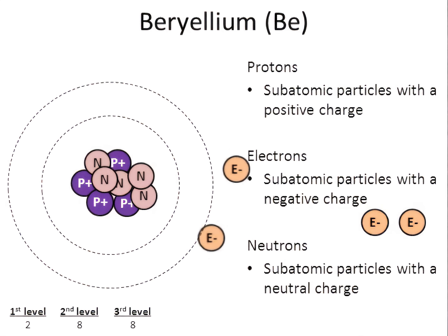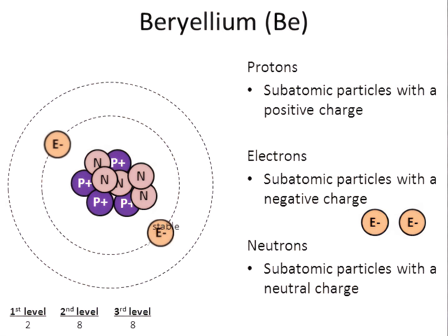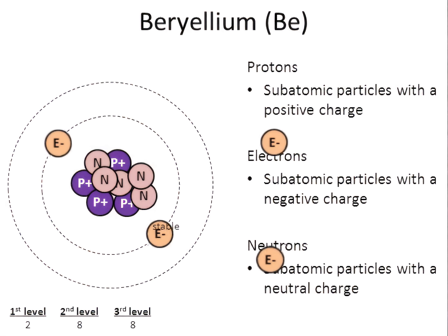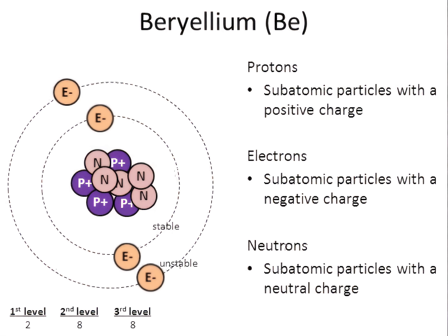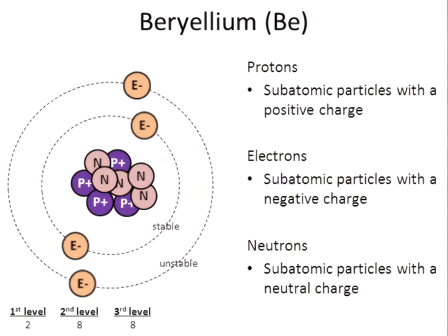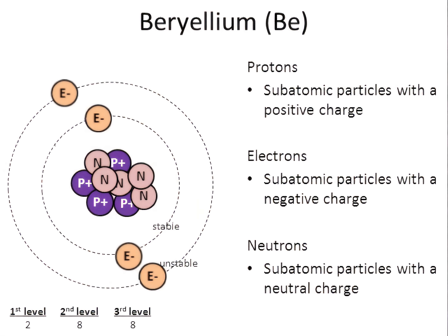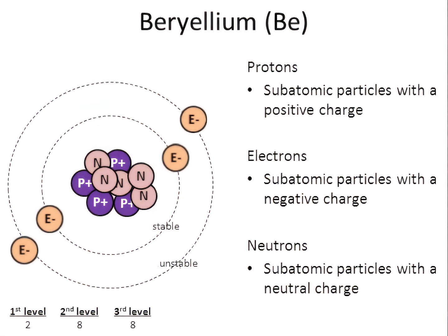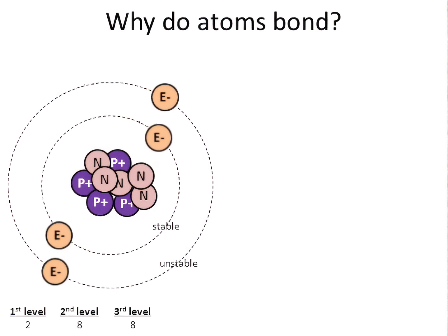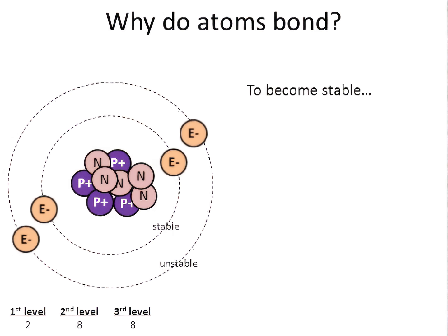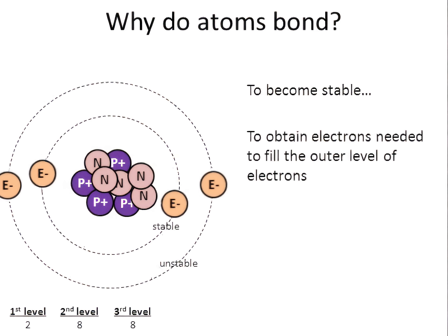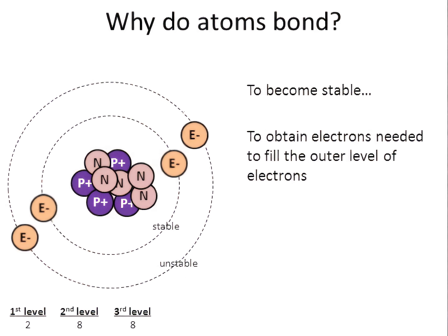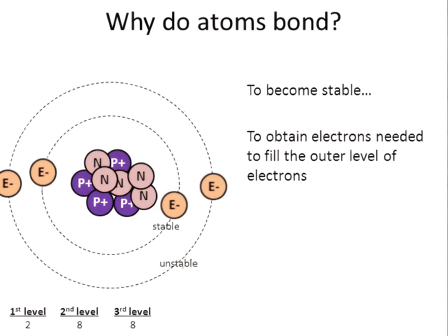Let me put two electrons in the first level of beryllium — the electrons kind of orbit the nucleus. The first level is now filled, it's stable. The other two electrons have to go in the second level. And here's the problem with beryllium: it's unstable, because the second level is not filled. The second level can carry eight electrons, but there's only two. So why do atoms bond with one another? They bond to become stable — they are trying to obtain more electrons so they can fill their levels.